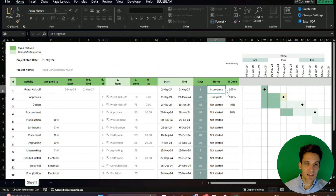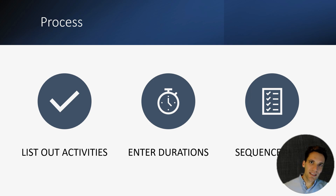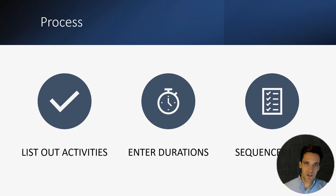And you can also track progress. In this video, I'm going to take you through how to use it and how to create a project schedule using it. You can create a project schedule in three easy steps. First, you need to list out all the activities you need to complete the project. Second, you need to work out the duration for each activity. And then the final step is you need to sequence the activities — put them in the order they need to be completed to complete the project scope.